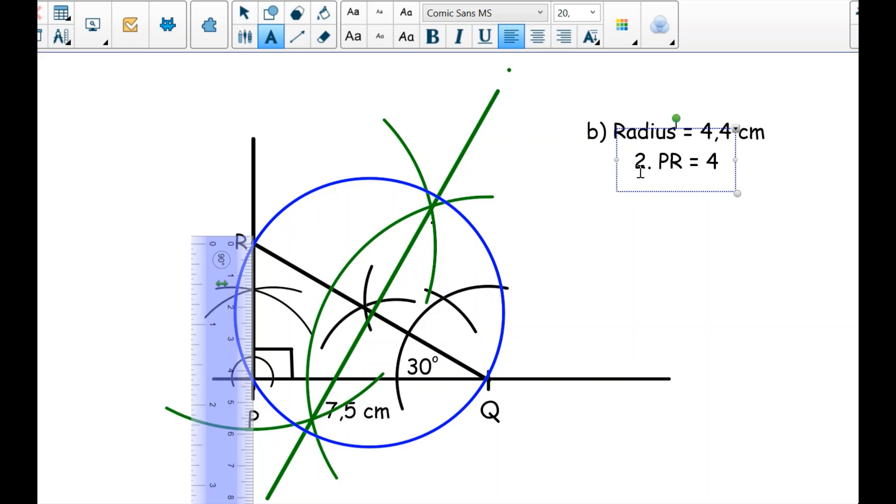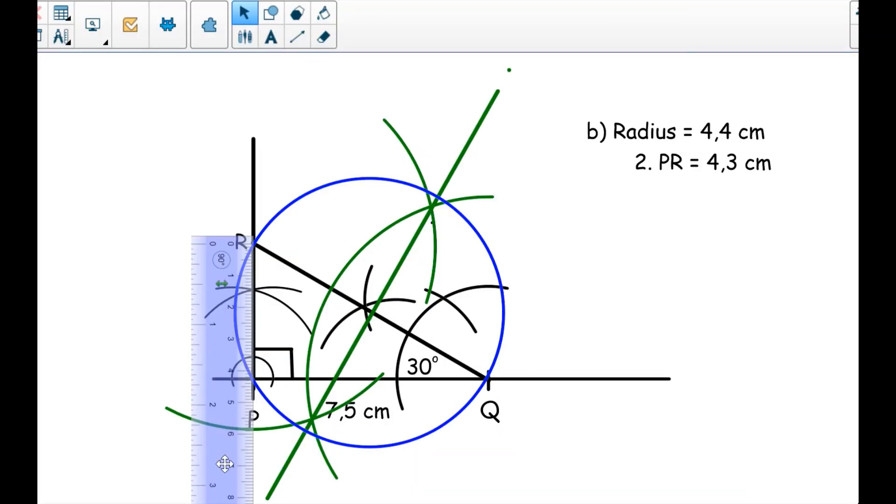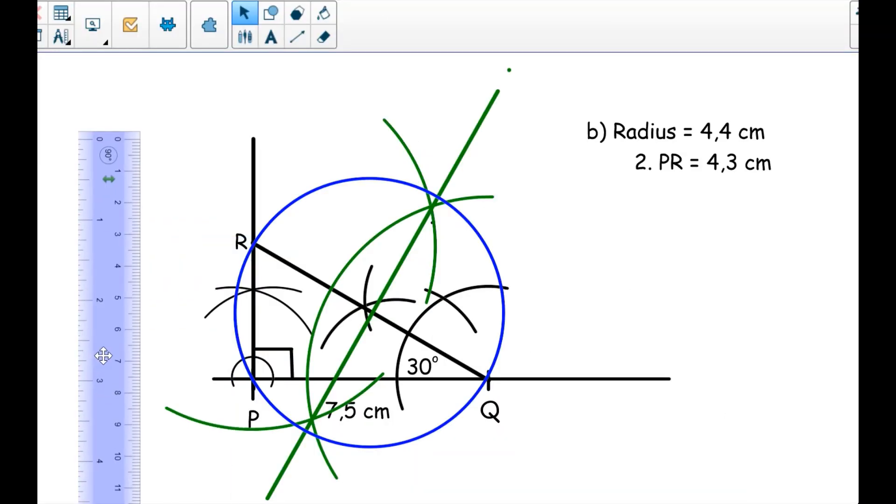So I'll write PR equals 4.3 cm. This was 2. Then I'll write PR equals 4.3 cm. Then we go back to the question and see the next requirement. The next requirement was to mark and label points X and Y on the circle which are equidistant from Q and R.